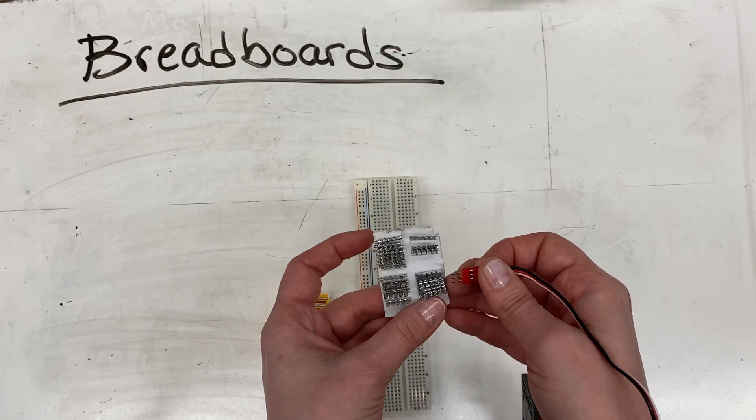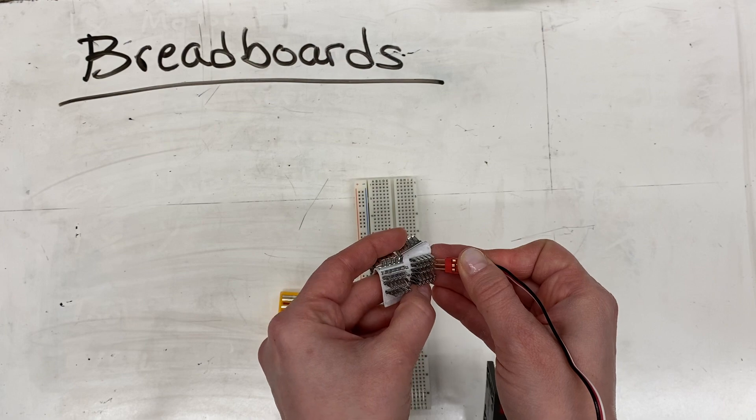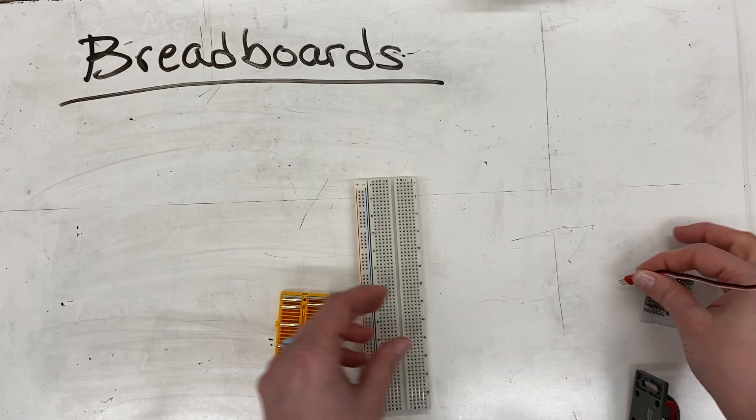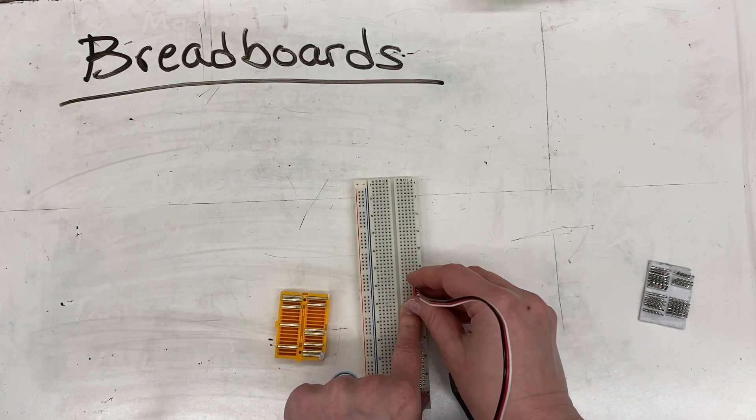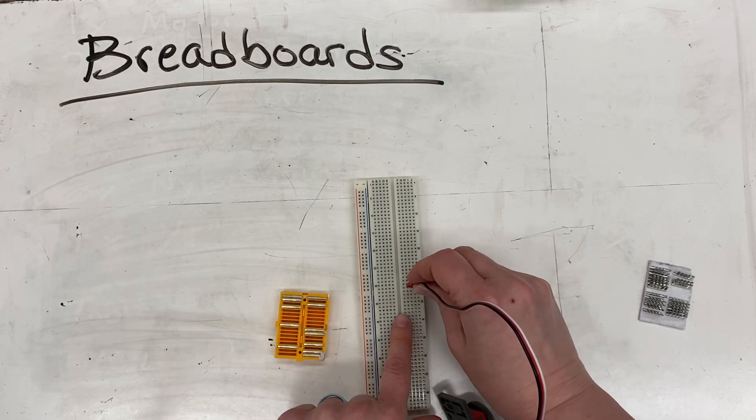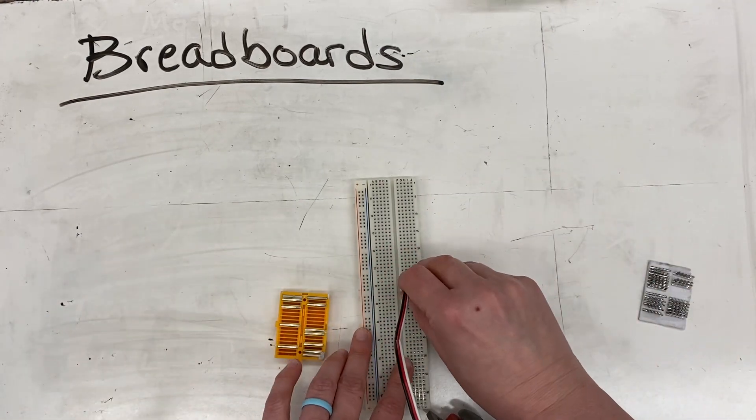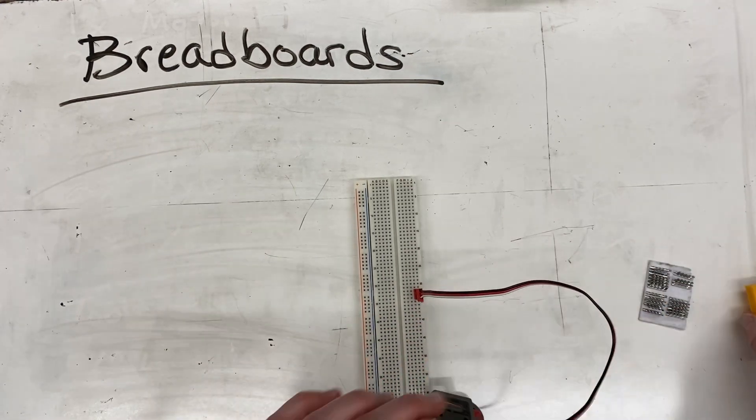When you're plugging it into the board, you plug the prongs that you want to be individual into separate holes. So we would do that here—you would plug them into separate holes. If we plug it here where they're in the same row, that would be a short circuit. They need to be like this.